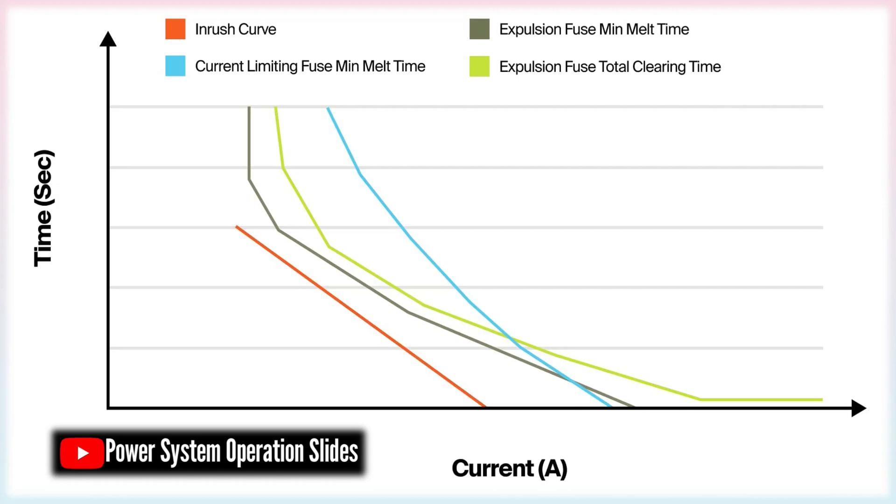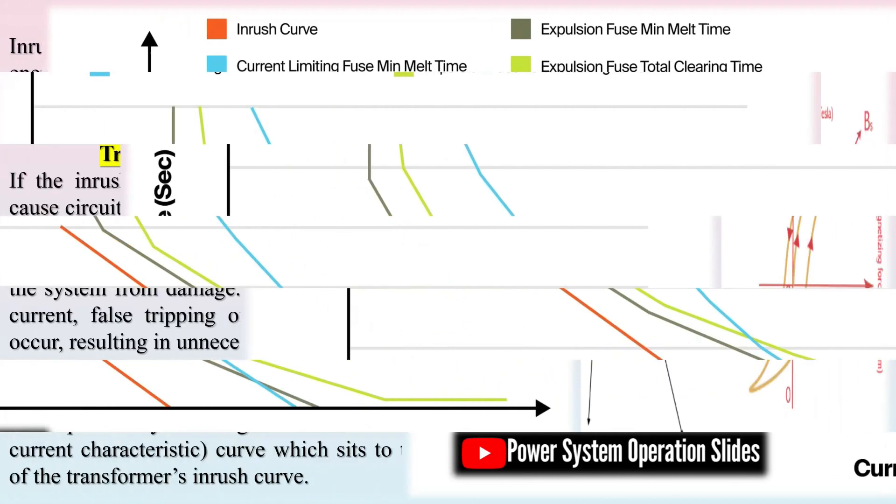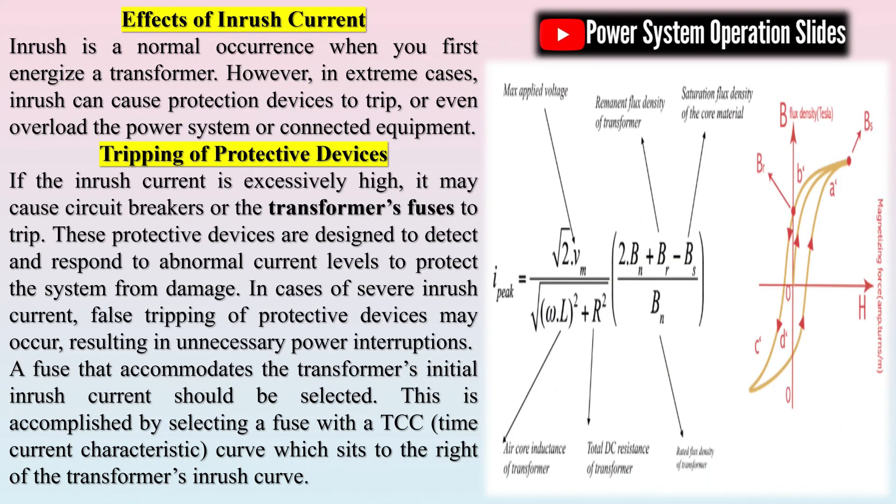Reverse-feeding transformers: When a transformer is reverse-fed, its inrush current tends to be significantly higher. This is due to the fact that in a step-down transformer, the secondary windings are positioned closer to the core and therefore exhibit lower impedance. Under reverse-feeding conditions, this lower impedance can result in the inrush current being doubled or even tripled compared to normal conditions.